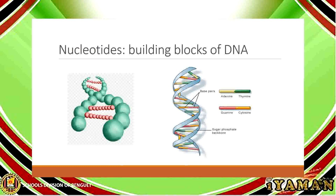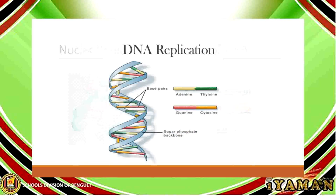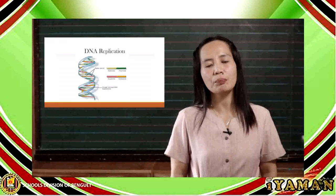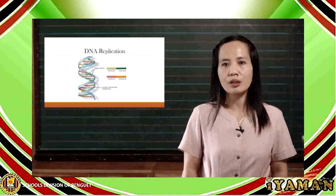Second is the phosphate. Third are the nitrogenous bases, and these nitrogenous bases carry the genetic material responsible for heredity. The nitrogenous bases are made up of four types: adenine, which pairs with thymine, and guanine, which pairs with cytosine — and vice versa. These are what we call the complementary base pairs in a DNA molecule.